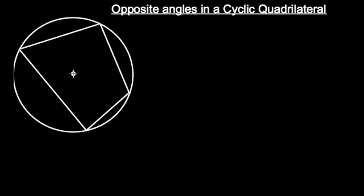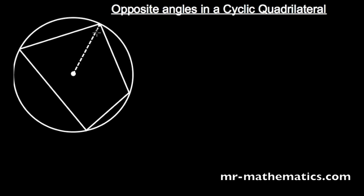We are going to look at the opposite angles in a cyclic quadrilateral. To do this we are going to look at the proof of the angle at the centre and at the circumference. So we are going to draw in our radii.